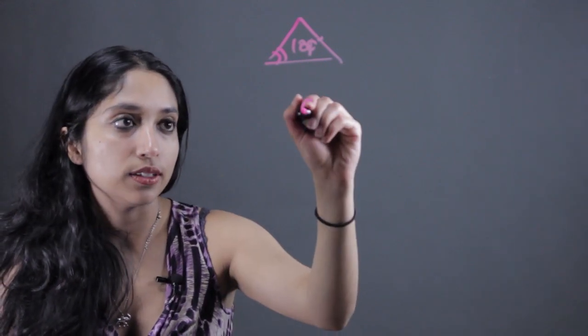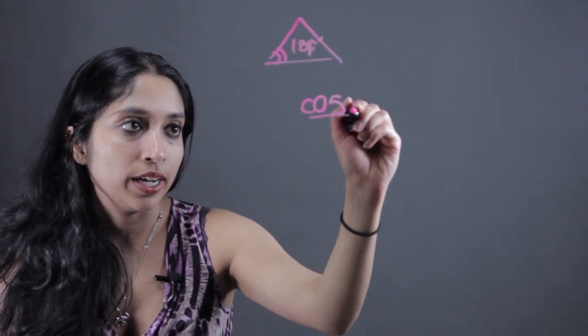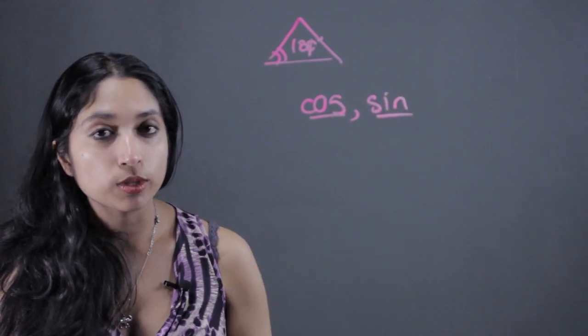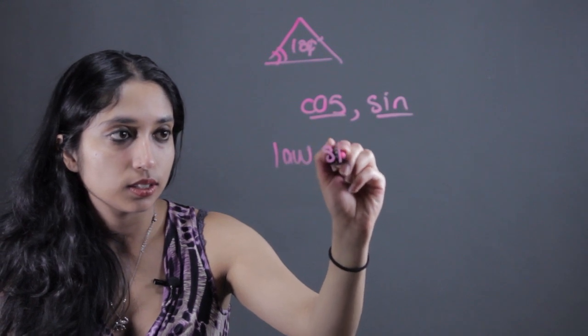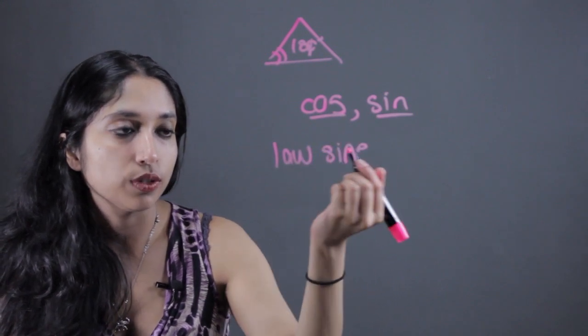An example of that would be cosine, sine, and in terms of identities, something like the law of sines or the law of cosine.